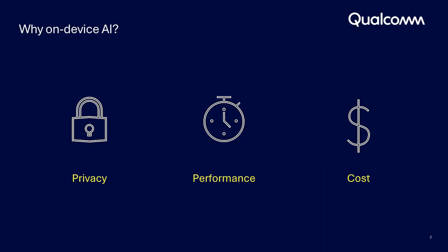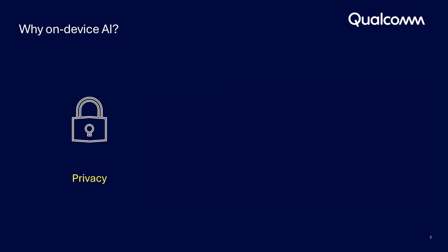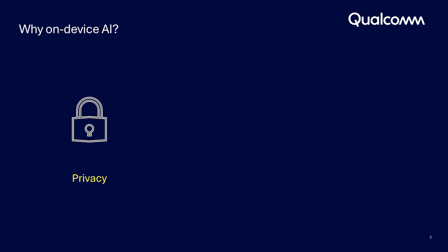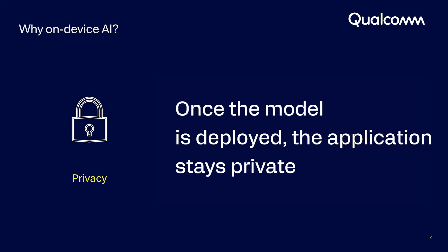First, let's talk about the benefits of on-device AI. Bringing the machine learning model on-device means that the data isn't being shared with anyone else. Once the model is deployed into an application, it stays private.